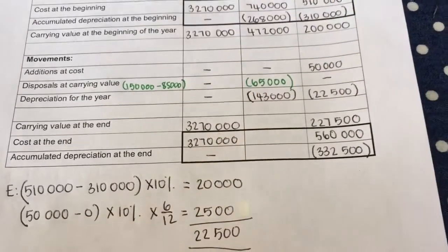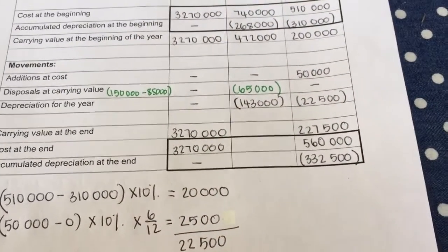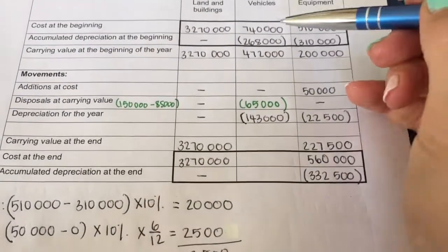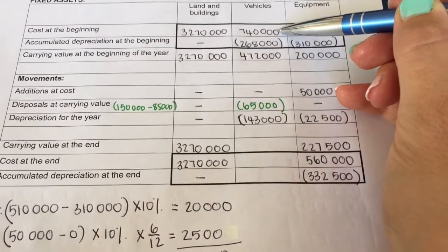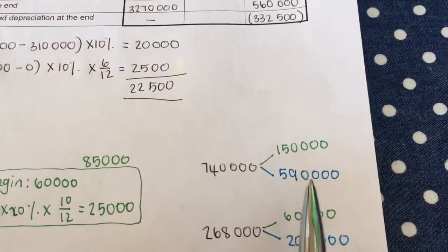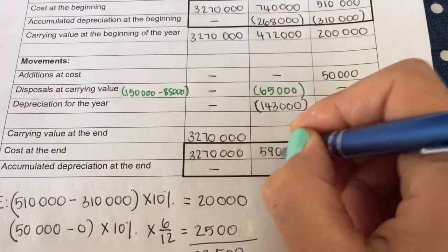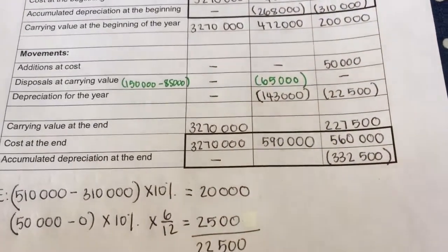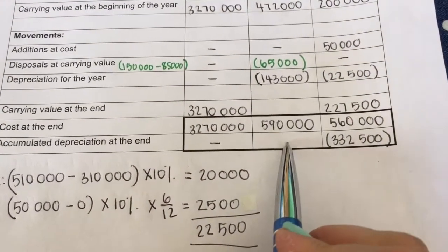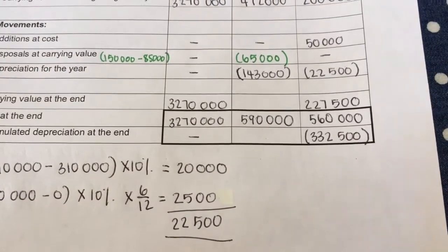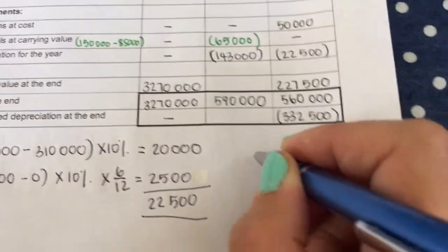Now I need cost at the end. I started with 740 and it shows it over here. I sold 150, so my cost at the end will be 590,000. So that's easy. Getting my accumulated depreciation is a little bit difficult.